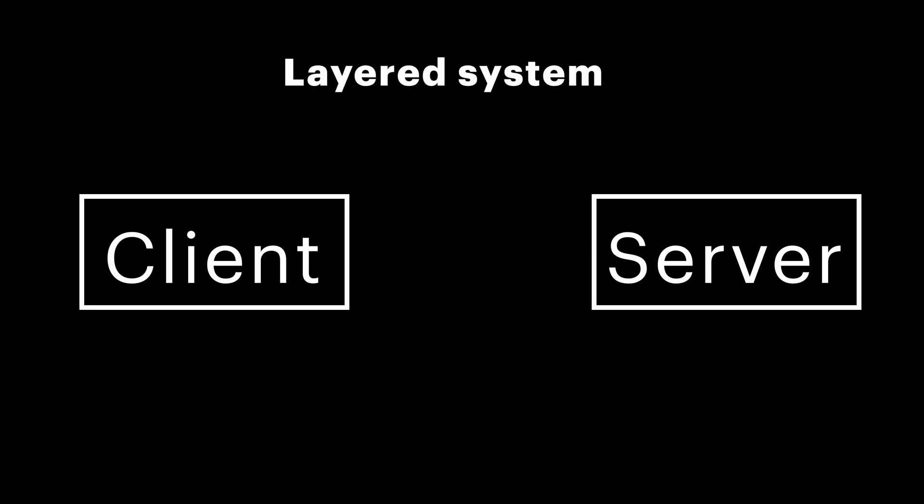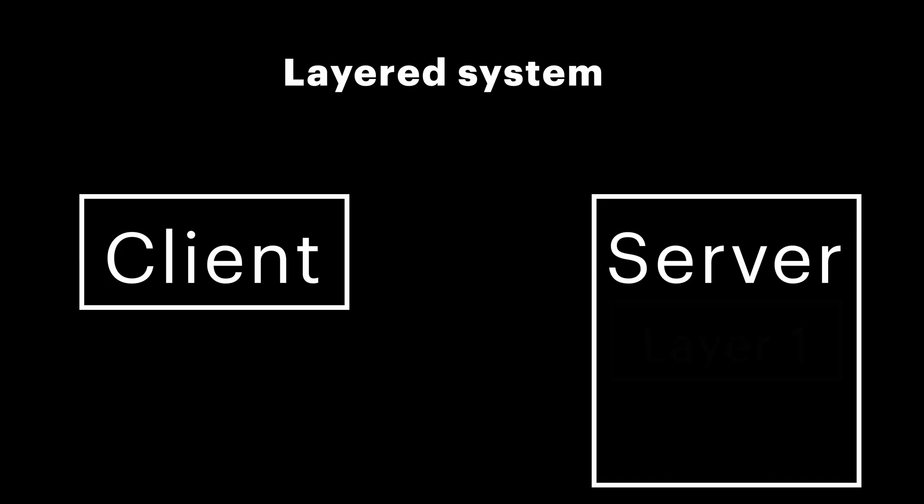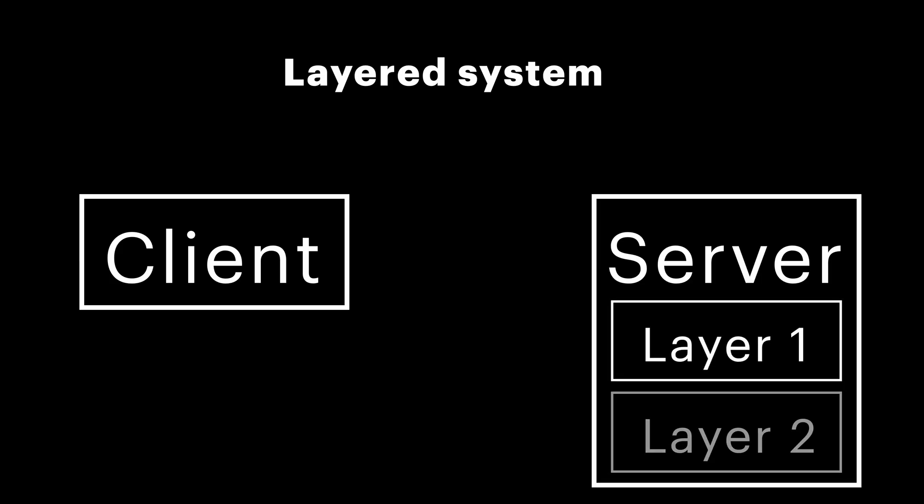The second constraint, layered system, is kind of similar. The idea here is that if the server has a complex structure, it should be divided into multiple layers, each responsible for different tasks, such as load balancing, security, etc. And again, the client should not be concerned with what happens under the hood — what kind of layers are used, how they connect, and so on.